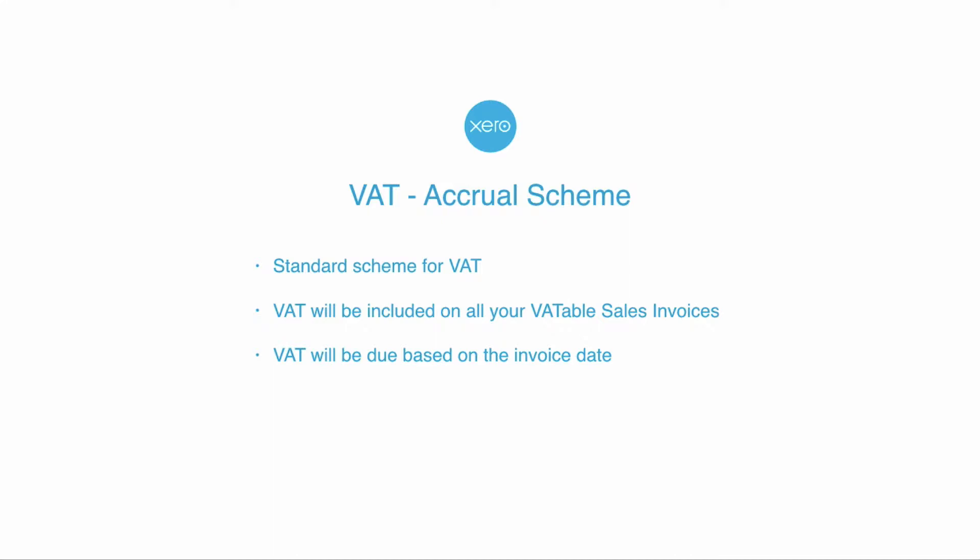When will that VAT be due to be paid to HMRC? It will be based on the date of your sales invoice. So if you have a VAT quarter that ends the 31st of March, and you have a sales invoice dated the 31st of March, it will fall into that VAT quarter to determine when you have to make the payment.